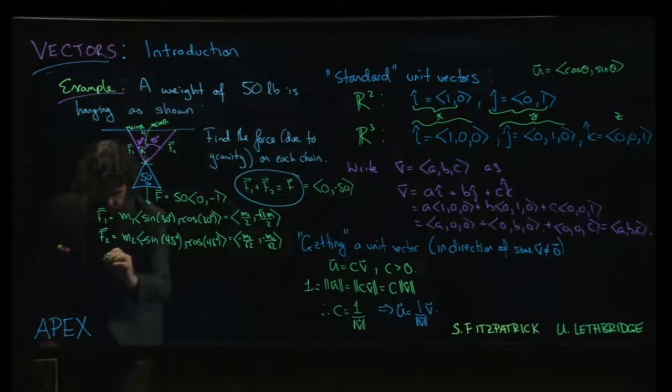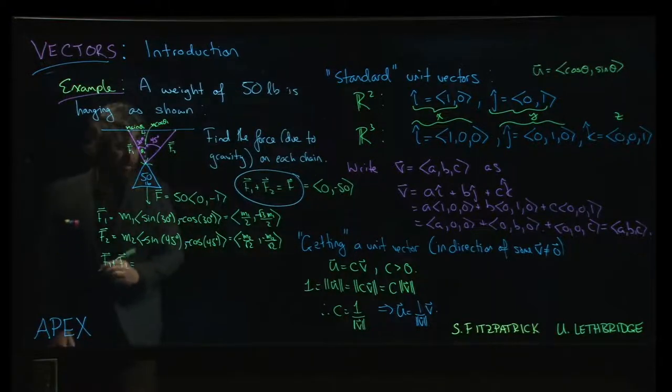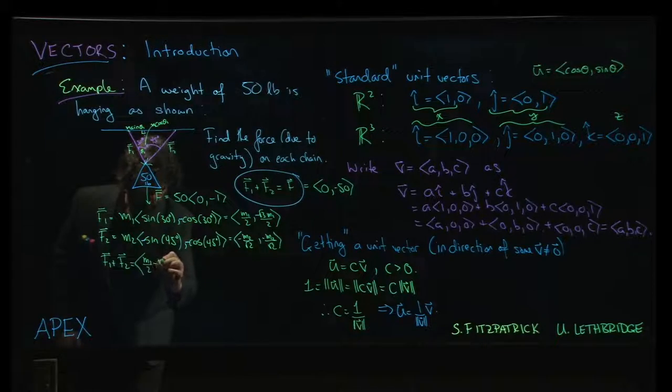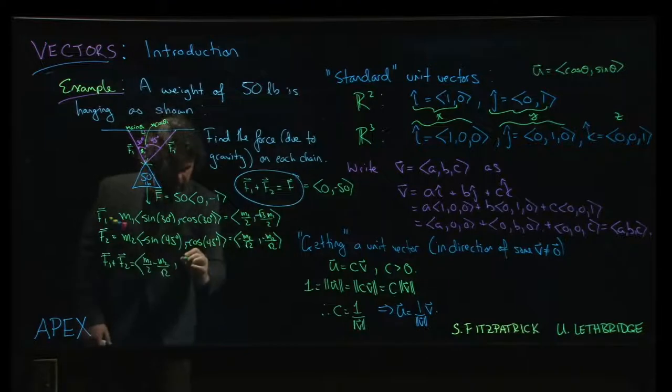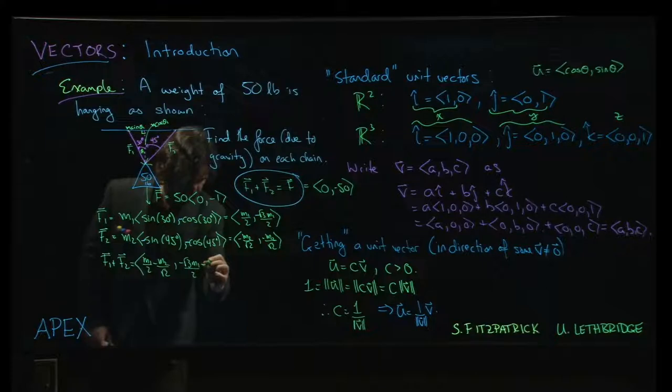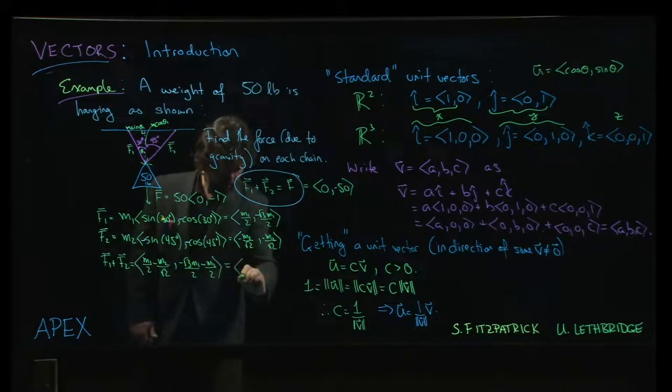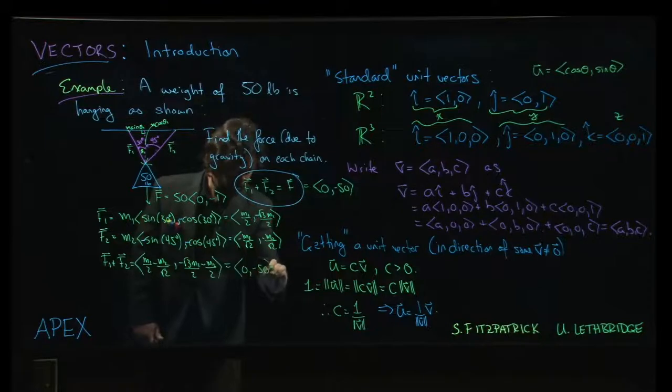All right, so F1 plus F2, we add these two together, we're going to get M1 over 2 minus M2 over root 2, and then we're going to get minus root 3 M1 over 2 minus M2 over 2, okay? And that's supposed to equal 0 and negative 50.